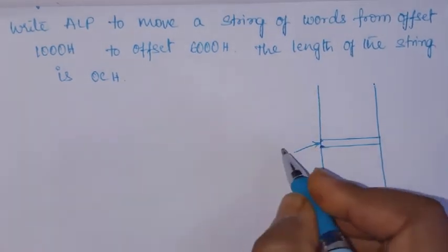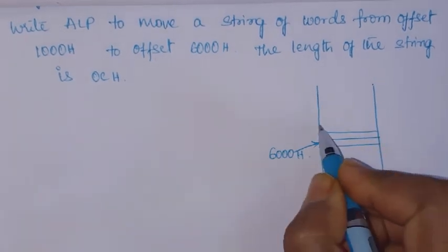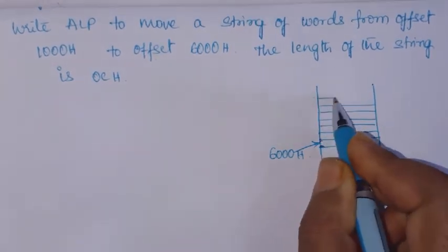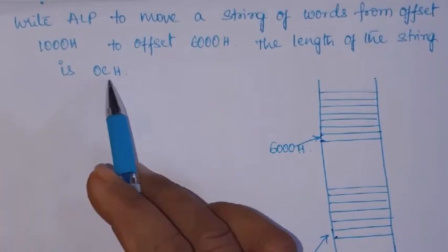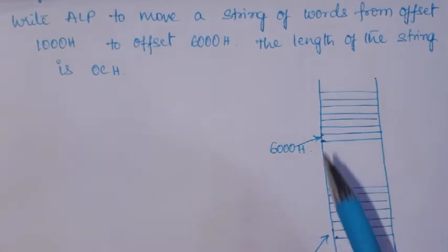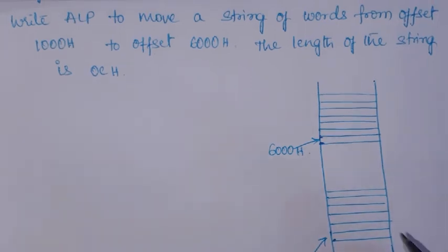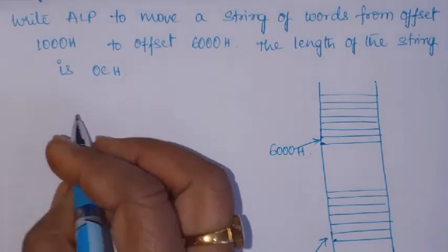Carefully read the question - it says string of words, which means 0C words, that is 0C into 2 bytes. We can transfer each word at a time because the registers are 16-bit, so one word at a time can be transferred from source to destination.